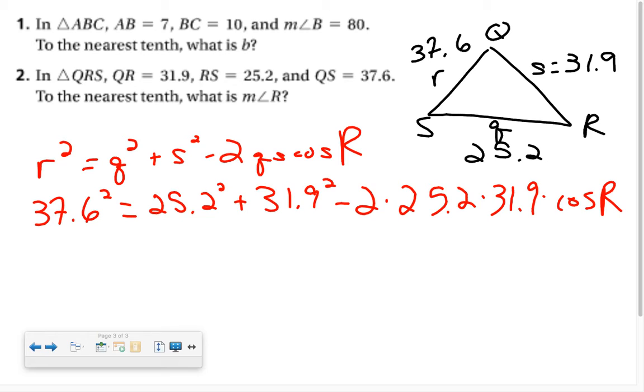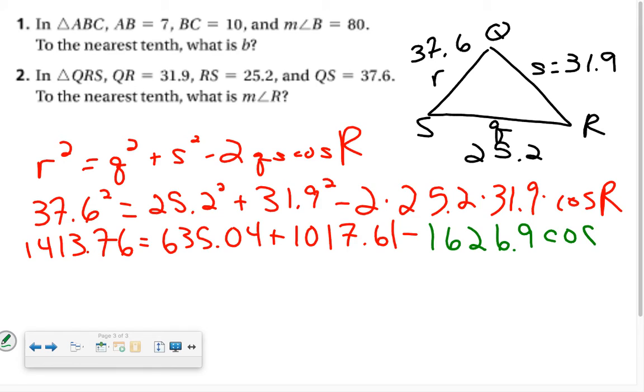Okay, so simplifying, 37.6 squared, 1413.76 equals 635.04 plus 1,017.61 minus 2 times 25.2 times 31.9. That is 1626.9 times the cosine of R.